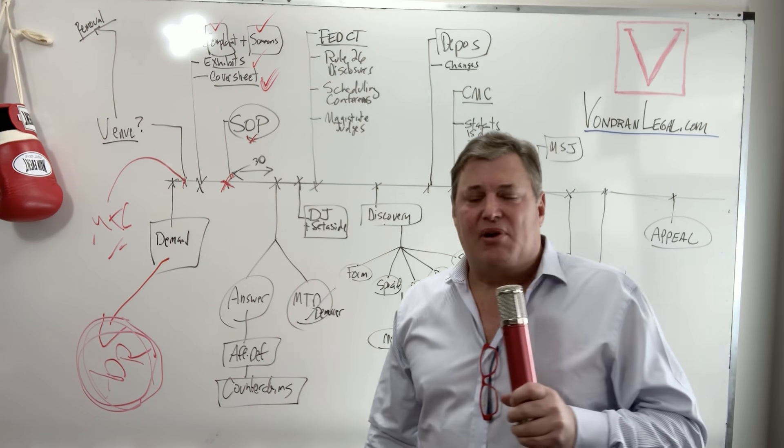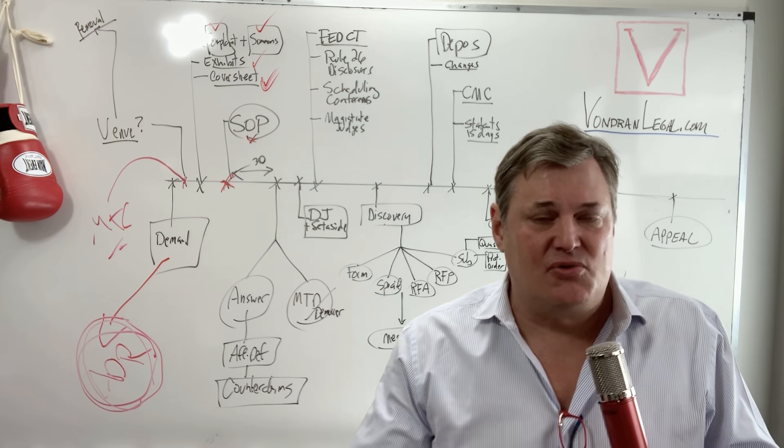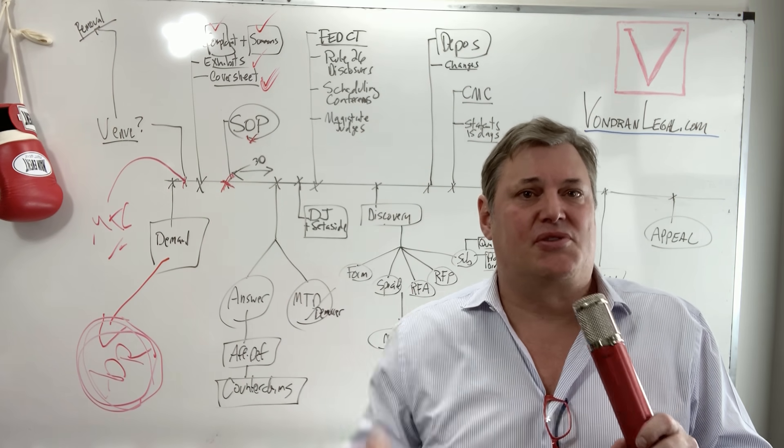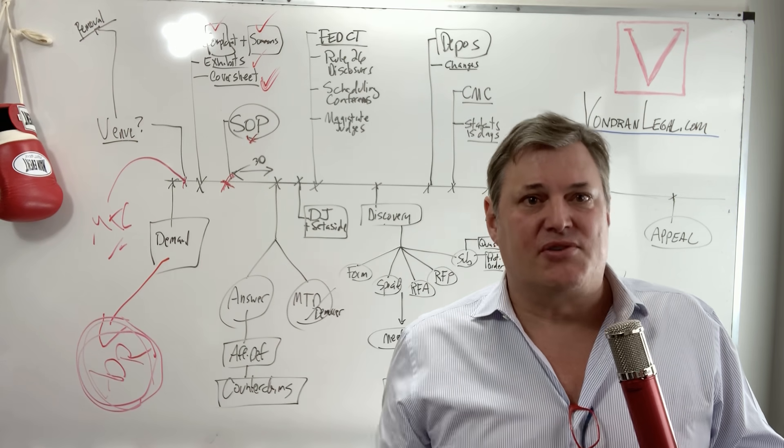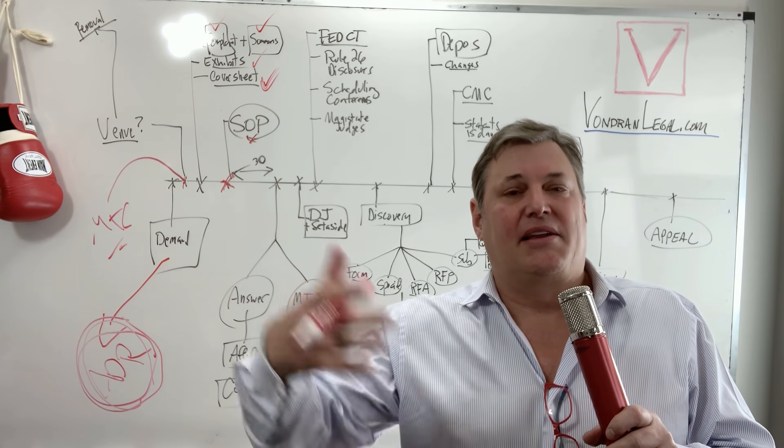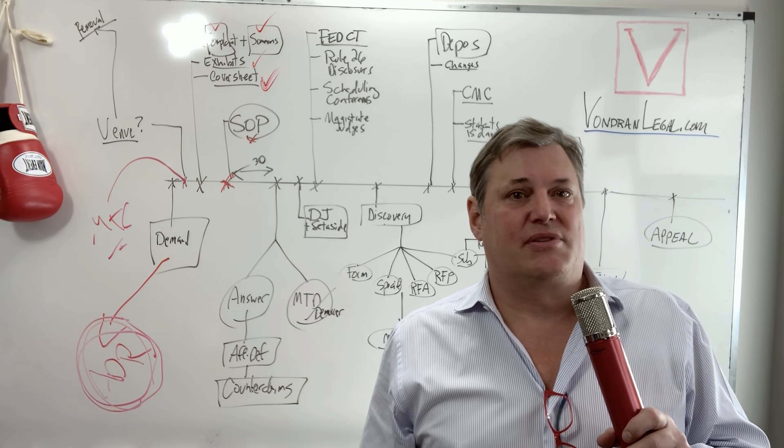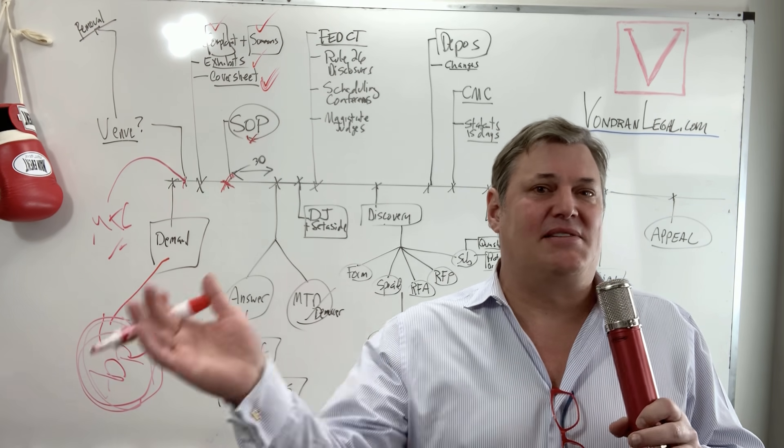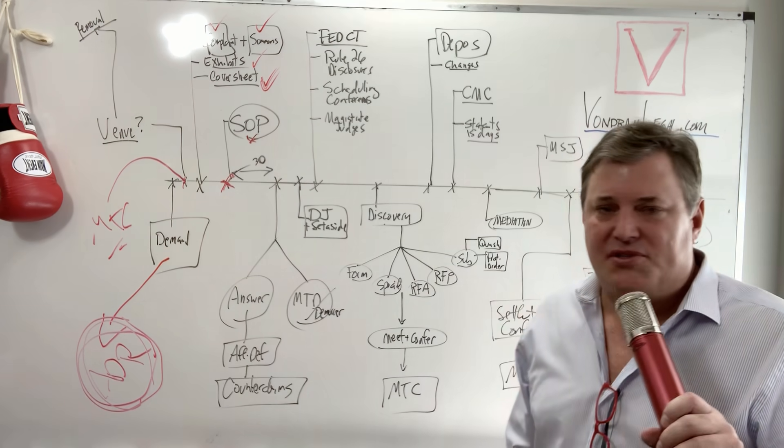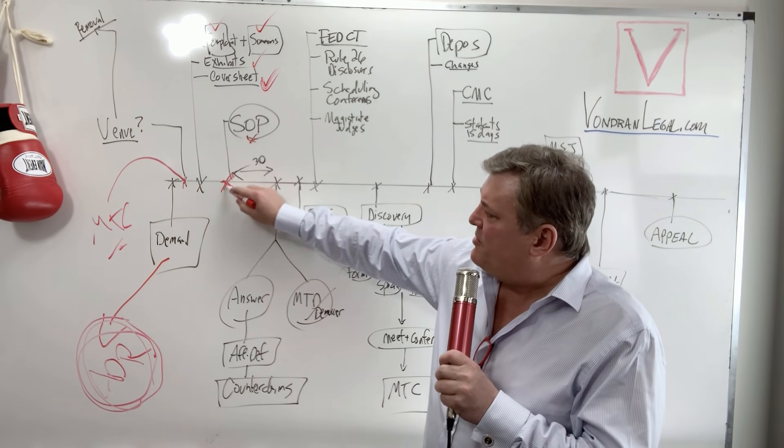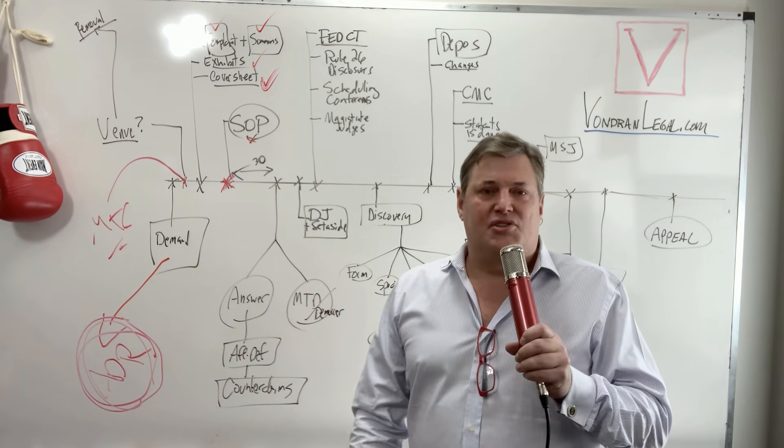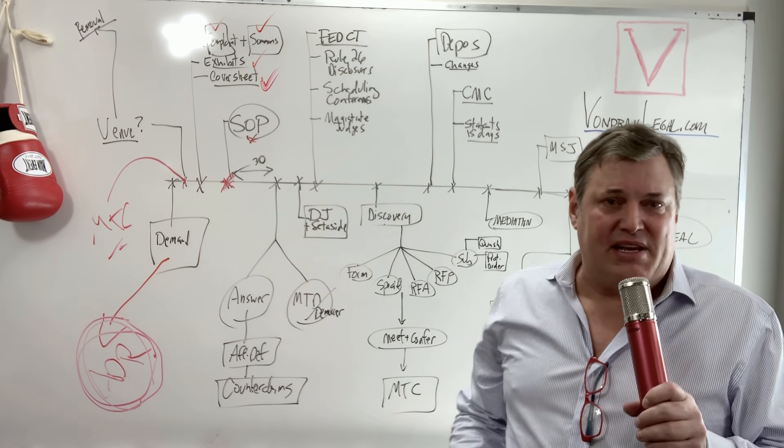So you have your service of process, sometimes substitute service, substitute service will also work, giving it to someone of mature years, someone of mature years, as they say, likely to give it to the person who's entitled to it. There's other ways you can serve corporations through their registered agents. So I'm not going to go into that in depth, I am going to be doing another video on service of process to get down the nitty gritties.